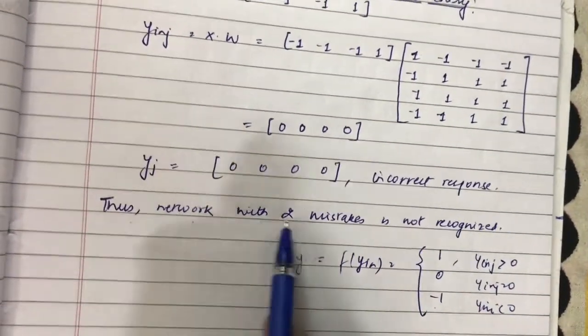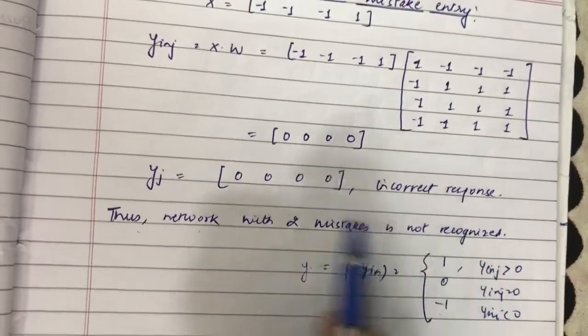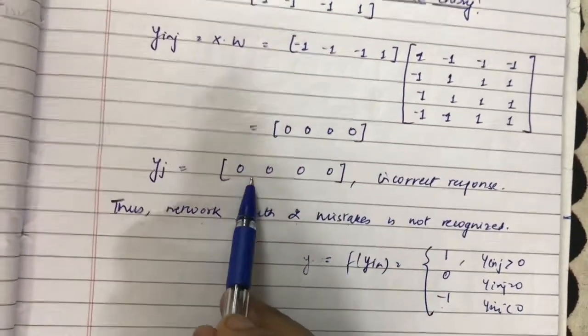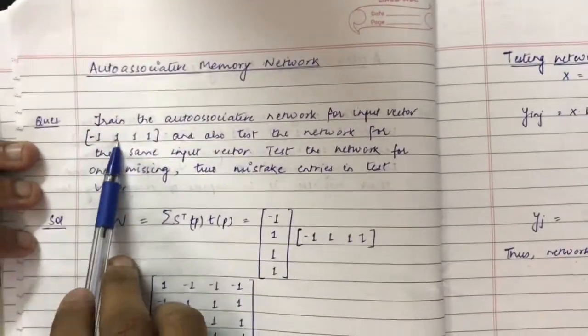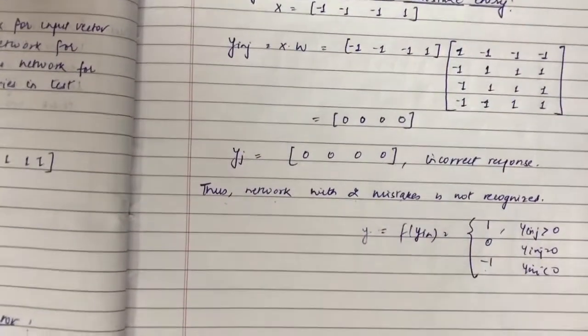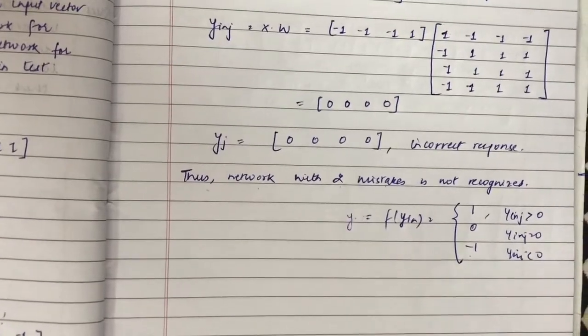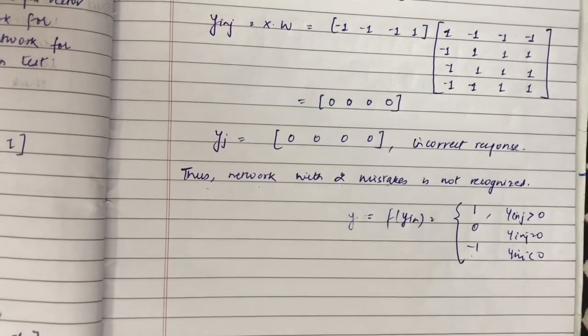So the network with two mistaken entries is not recognized, because the output we got is [0, 0, 0, 0], while it should be [-1, 1, 1, 1]. With this, the auto-associative memory network tutorial is completed. I hope you liked the video. Please like and subscribe. Thank you.